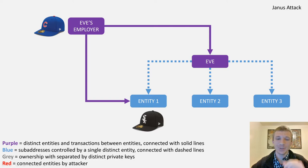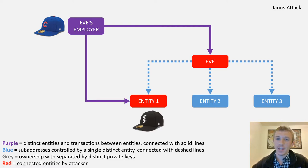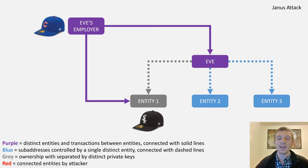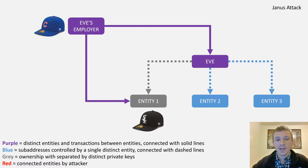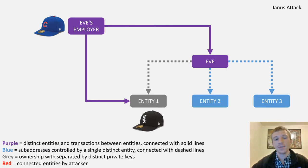In the example where Eve is smart and uses a separate seed for Entity One, Entity One has its own set of private keys and its own seed. So if Eve's employer tries to send a transaction to Entity One that only goes through if Eve's personal sub-address is also part of the same seed, they would know it would not go through. Therefore, Eve's employer is not able to create this sub-address association.